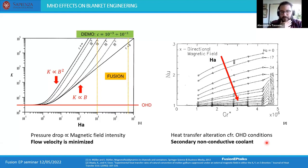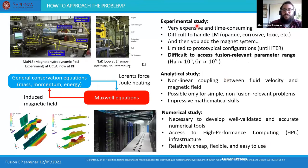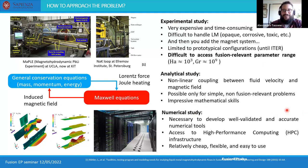When we apply a magnetic field to an electrically conducting fluid, all flow features change — every parameter important for engineering the component is affected. For this reason, MHD analysis is required to properly design the breeding blanket. There are three techniques applicable to any engineering problem: experiments, analytical/theoretical study, or numerical study. Most of my research deals with numerical study, but I want to mention some peculiarities of this class of flows that make the numerical approach even more attractive.